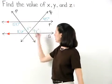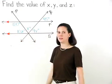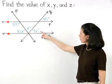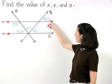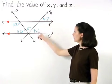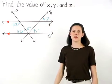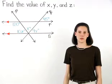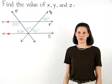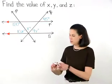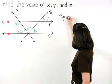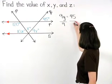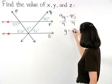Notice that lines r and s are parallel, and using the transversal q, we can see that the angle marked as 9y and the angle marked as 45 are corresponding angles. Since we know that if two parallel lines are cut by a transversal, then corresponding angles are congruent, we can set up the equation 9y equals 45. And dividing both sides by 9, we find that y equals 5.